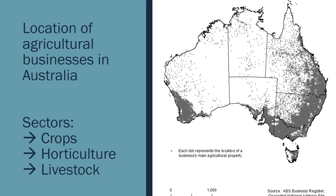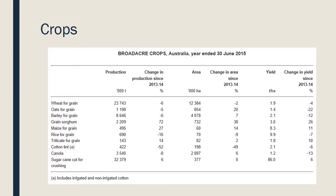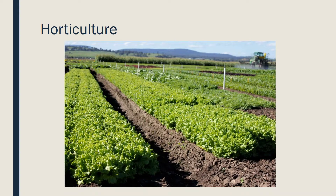Australia's agricultural industry is divided into three main sectors: crops, horticulture, and livestock. Cropping industries provide a significant contribution to the national economy as well as many regional communities. The grains and oilseed industry produces 35 to 45 million tons of grain per annum from an area of about 20 million hectares. The annual gross value of production is around 9 to 13 billion dollars.